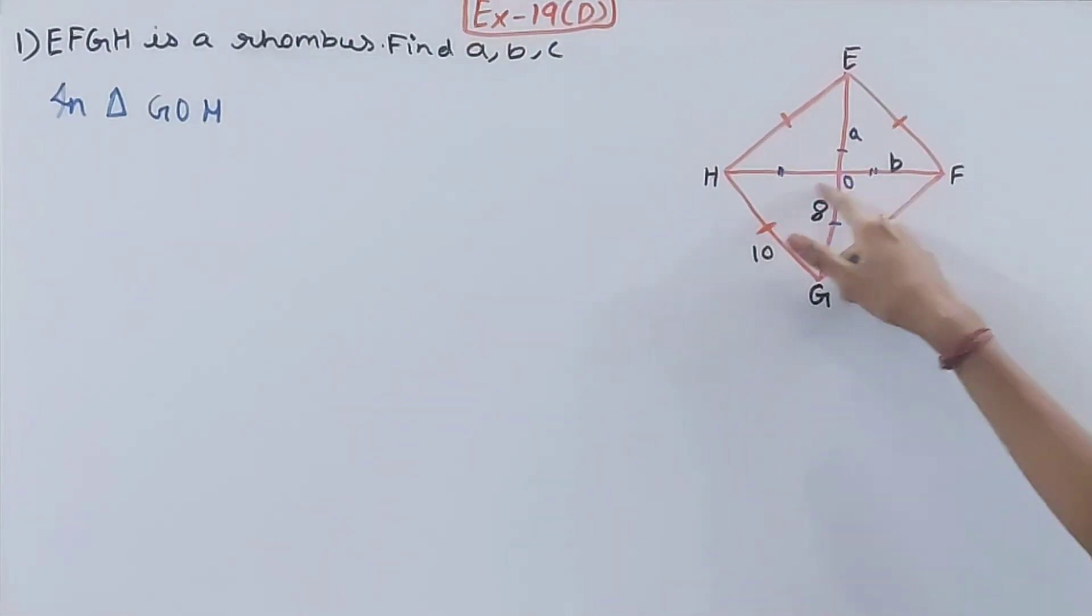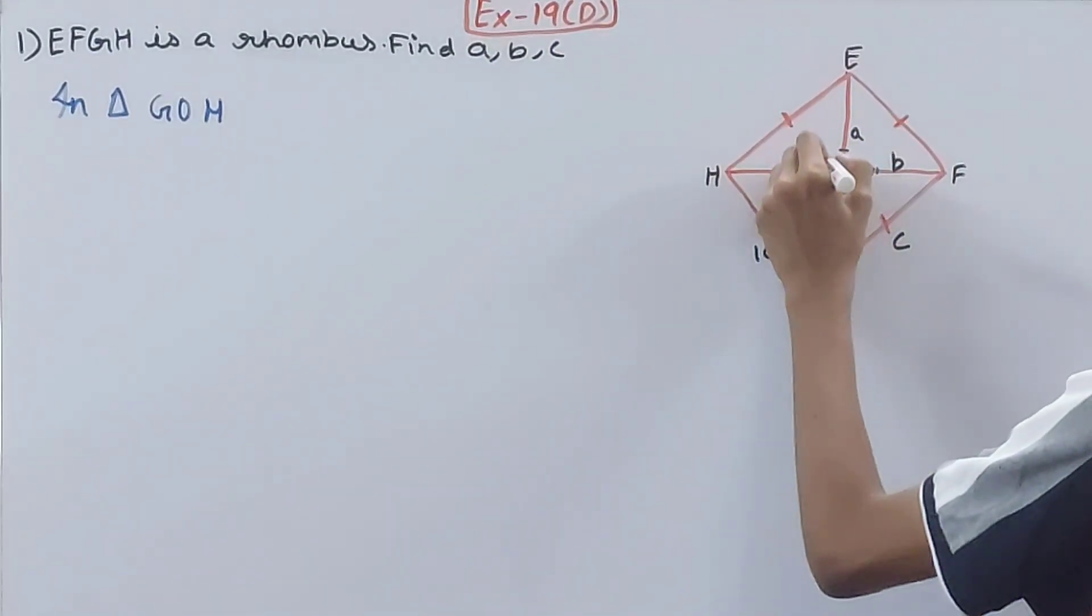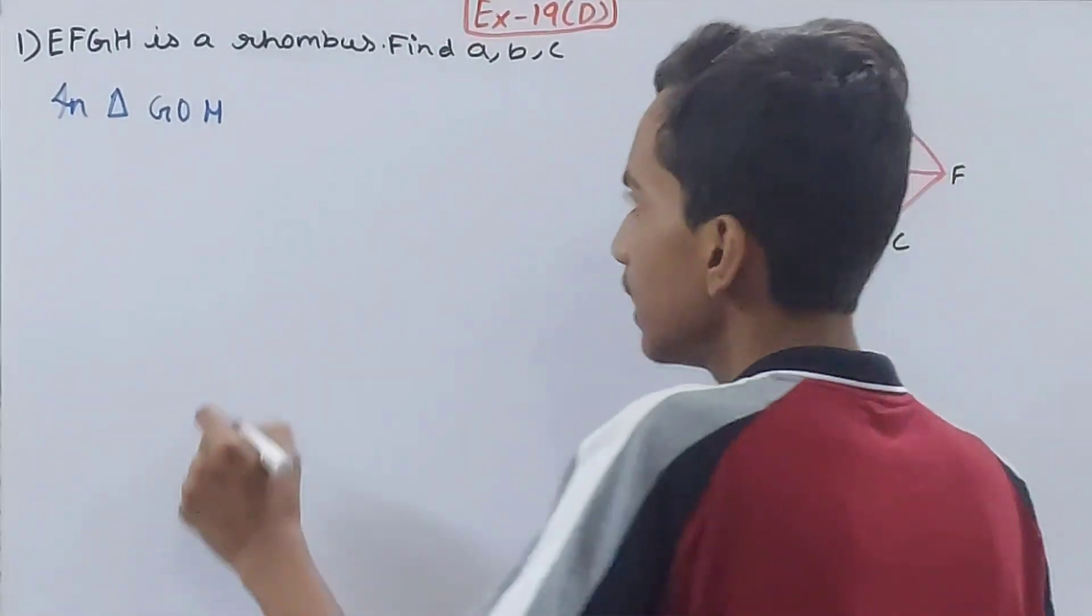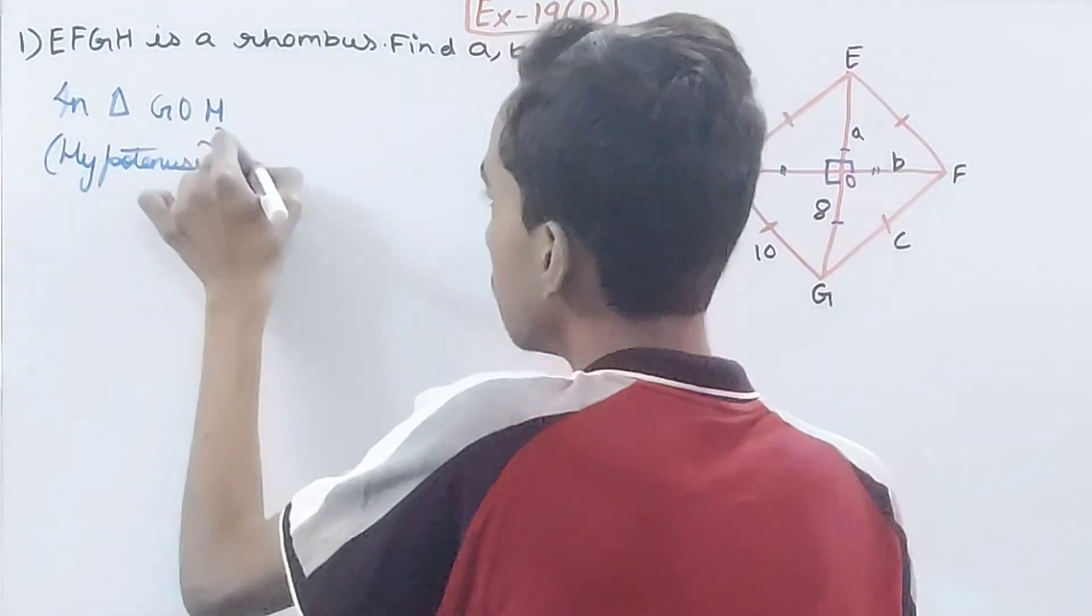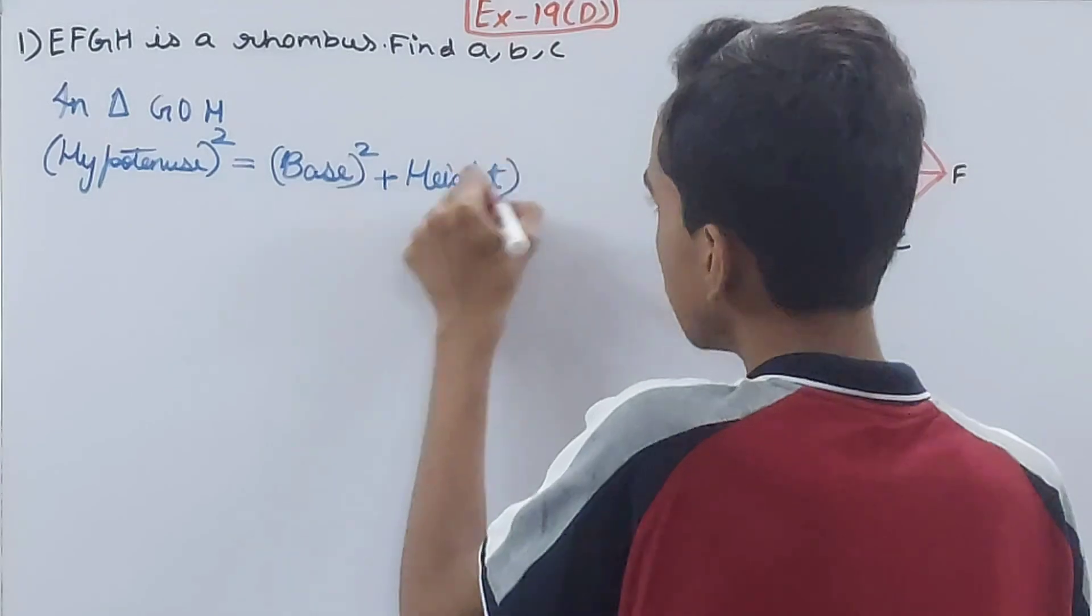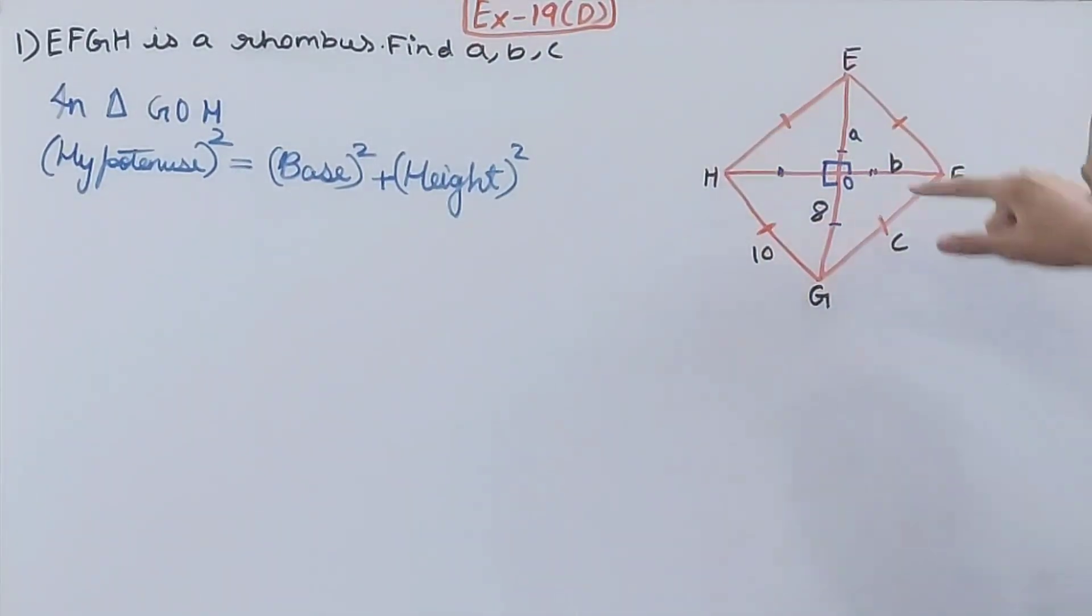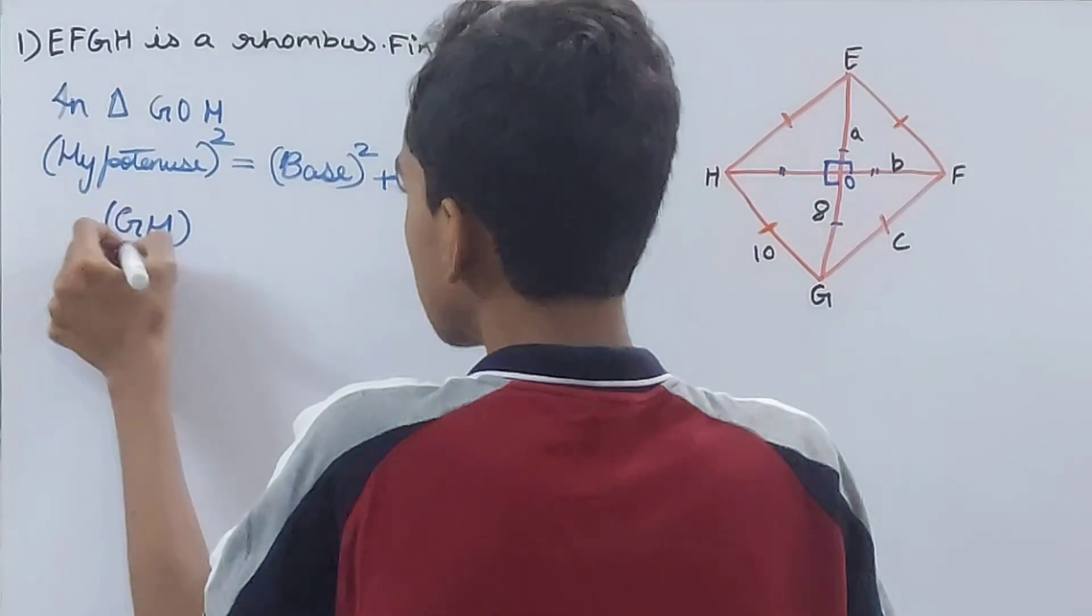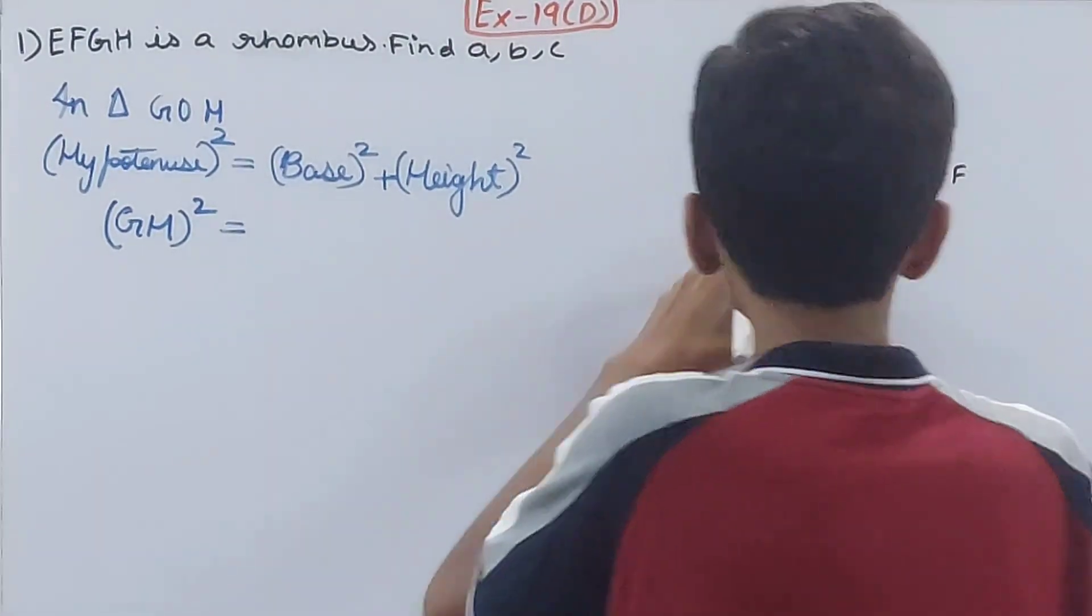In triangle GOH, you have to use the Pythagorean theorem. First, one very important thing is that they are bisecting each other at right angles. When the triangle is a right triangle, then only you can apply Pythagorean theorem. It says hypotenuse squared is equal to the square of the base plus the square of the height. The hypotenuse is always the longest side or the side opposite to the right angle. In the triangle, this is the right angle and the side opposite to it is GH. So GH squared is equal to OG squared